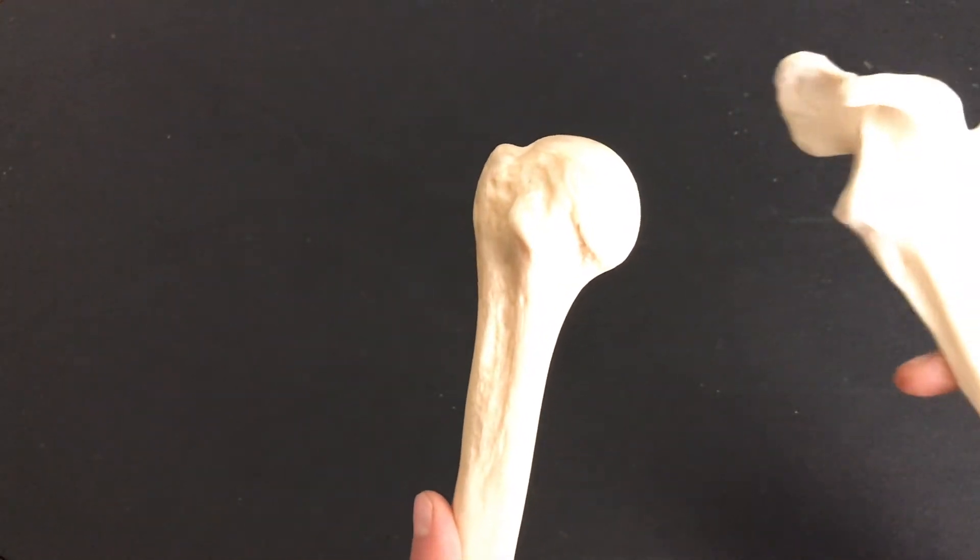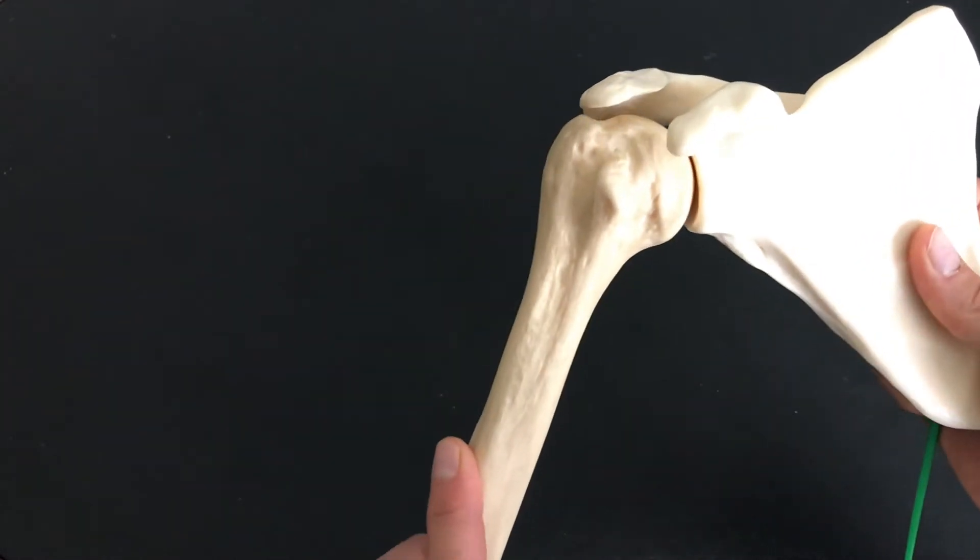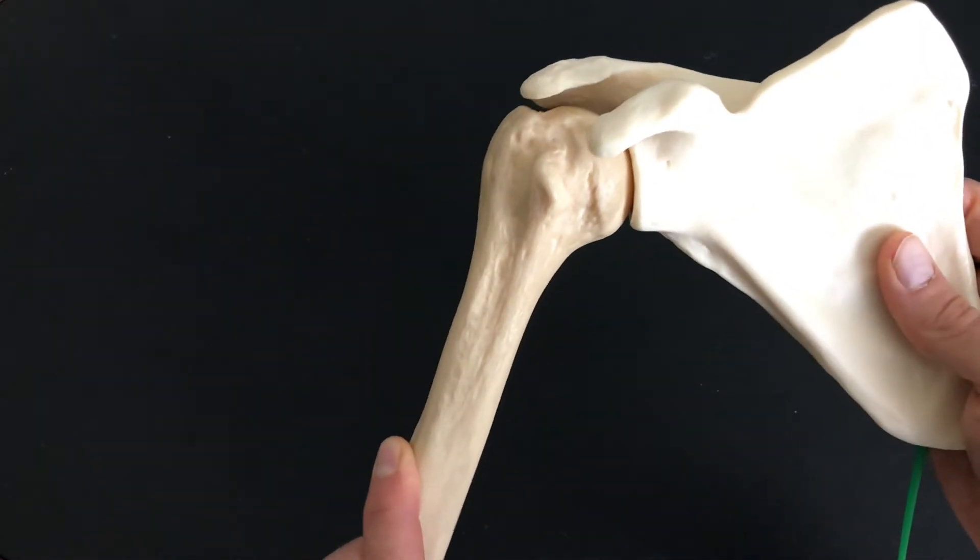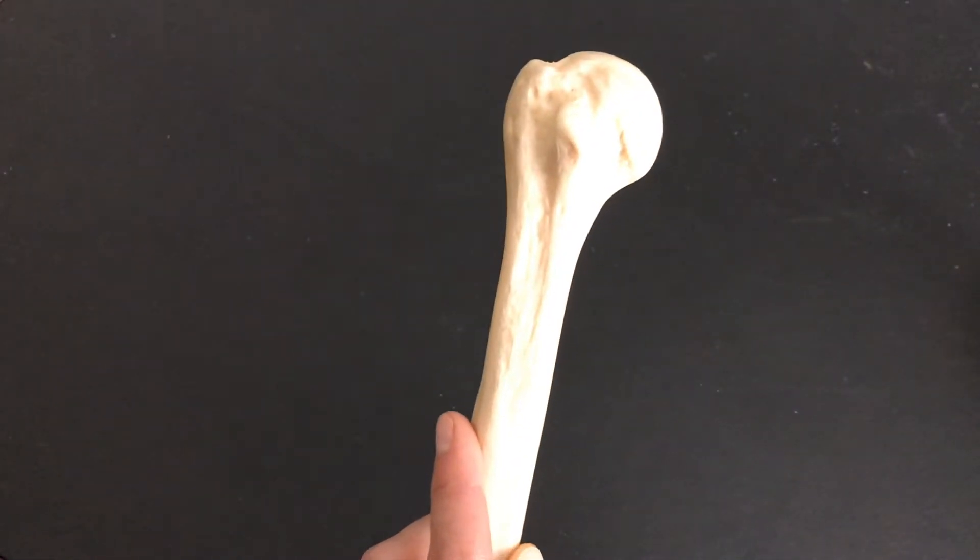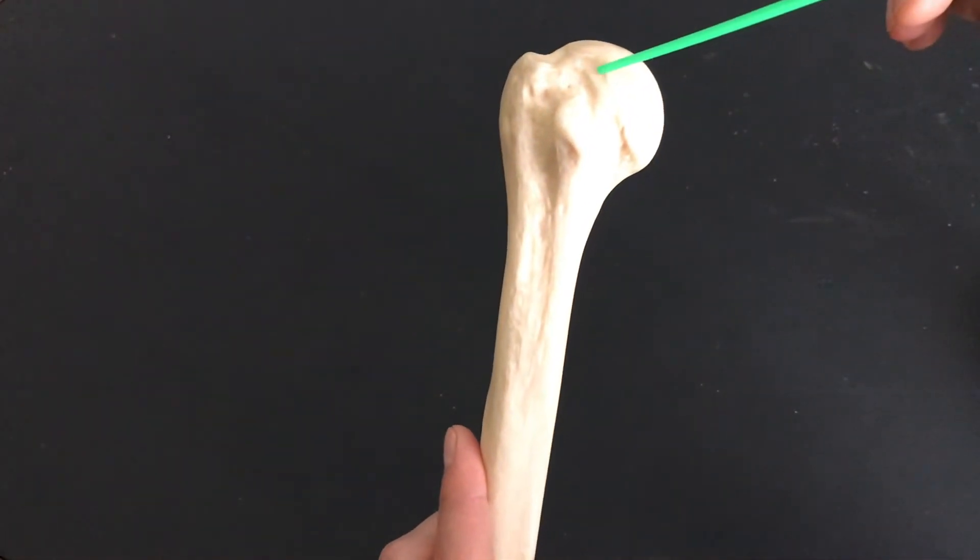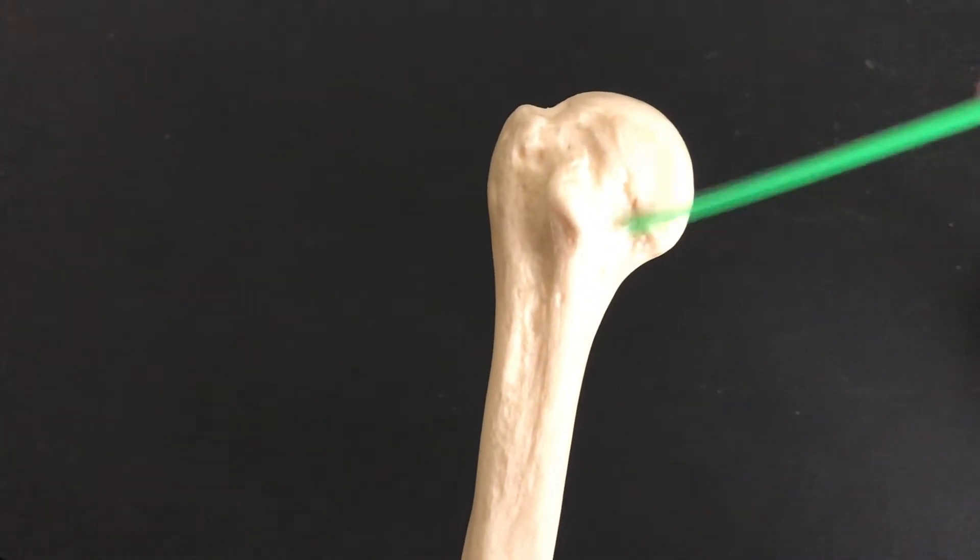If I take a scapula, you'll remember the glenoid cavity that's going to sit right in here. That's your ball and socket joint, that's your shoulder joint. From the head of the humerus, we then have the anatomical neck, which leads into these two recognizable bumps right here.